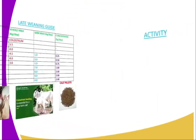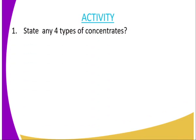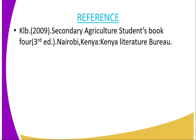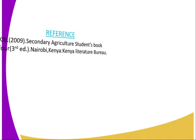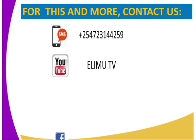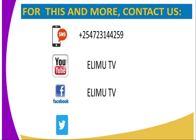To wind up the lesson, here is your assignment. Question one: state any four types of concentrates. Question two: differentiate between early and late weaning. For reference, use the Secondary Agriculture Student Book Four, published by the Kenya Literature Bureau. For more information, reach us at Elim TV via SMS, YouTube, Facebook, or Twitter at ElimTV underscore KE. Thank you for joining me in this lesson — bye bye.